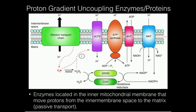Remember from the electron transport chain, the three complexes — one, three, and four — pump protons actively from the matrix into the inner membrane space, giving a very high concentration of protons in the inner membrane space and a relatively low concentration in the matrix. So there is a tendency, both by concentration and electric forces, that these protons would like to move back into the matrix.